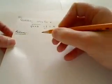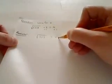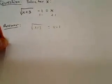So I'm left with the square root of x plus 3 in the radical is equal to x plus 1 on the right-hand side.